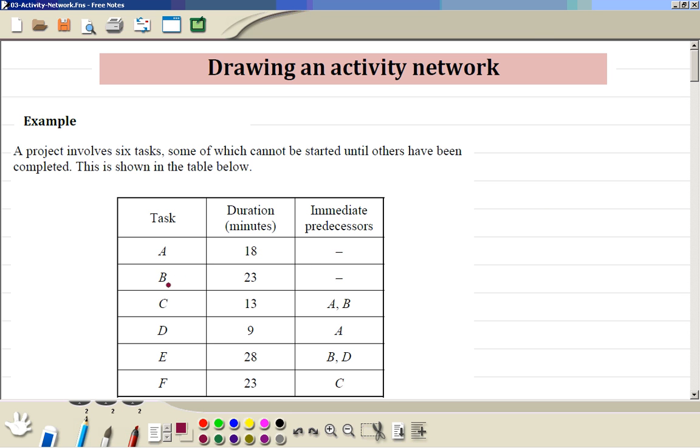So activity A and B are independent, so start the event 1. A can start and B can start. Then C depends on both A and B, so the event 2. Now we have to bring A down, we can't bring it just like that so we bring a dummy.